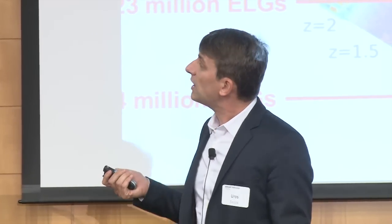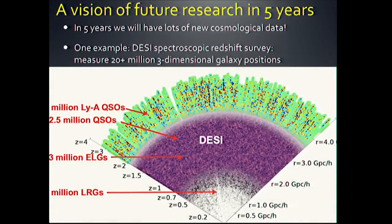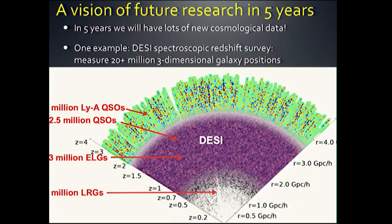Let me mention one called DESI — the Dark Energy Spectroscopic Instrument. It's a redshift survey which measures galaxy positions in the sky, and also measures their redshifts through techniques like emission lines. It will measure the three-dimensional distribution of galaxies out to a much larger distance than what we have today.